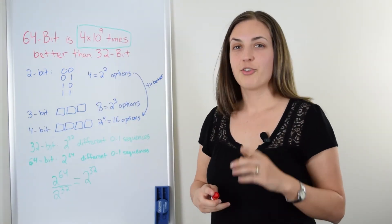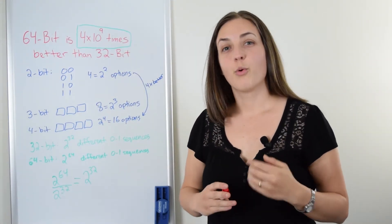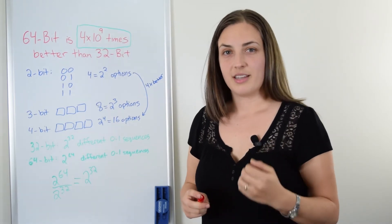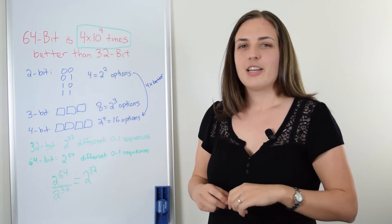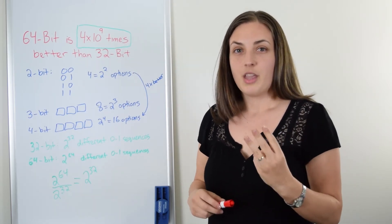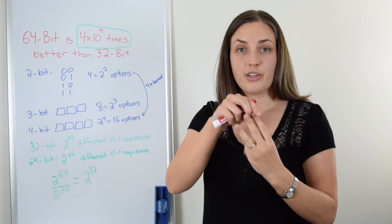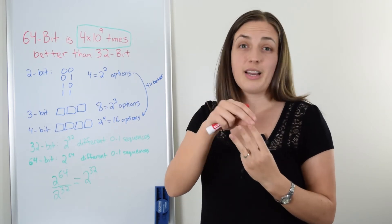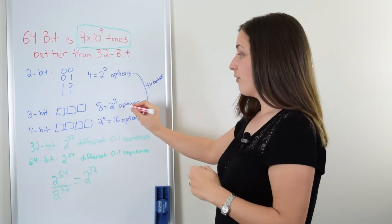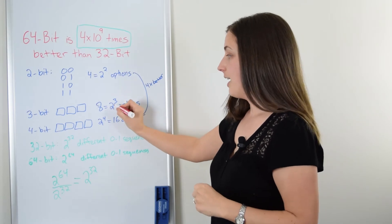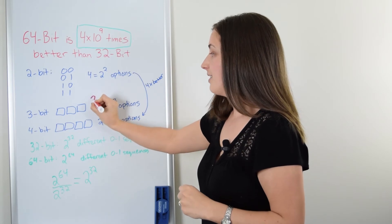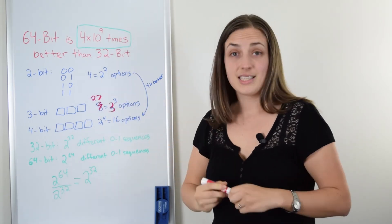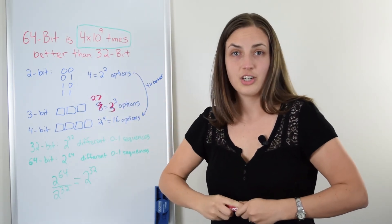Just imagine if your computer didn't work in binary but worked in a ternary system so that every bit could be a 0, a 1, or a 2. Let's see what would happen. In just a three-bit system, you would no longer have two, two, and two options. You'd have three, three, and three options. So instead of 2 to the power of 3 equals 8, you would have 3 to the power of 3, which is in fact 27.